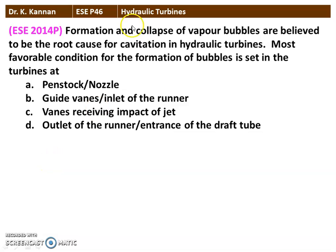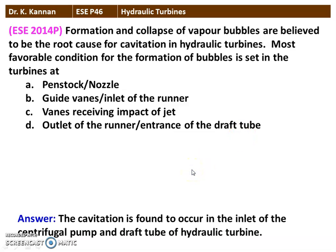The next question is from the 2014 question paper. Formation and collapse of vapor bubbles are believed to be the root cause of cavitation in hydraulic turbines. The most favorable condition for bubble formation occurs at the outlet of the runner or the entrance of the draft tube — option D. Cavitation occurs at the inlet of a centrifugal pump and at the entrance of the draft tube of a hydraulic turbine. Since this is a turbine, the answer is outlet of the runner or entrance of the draft tube.